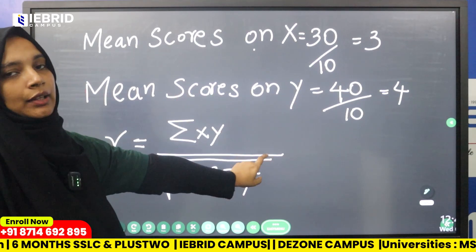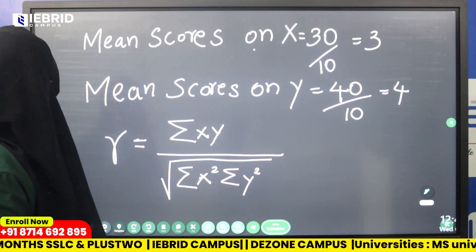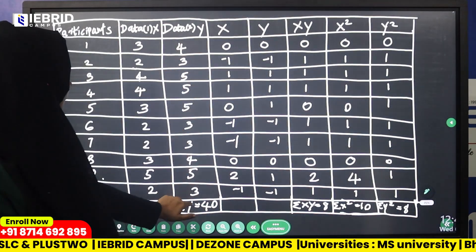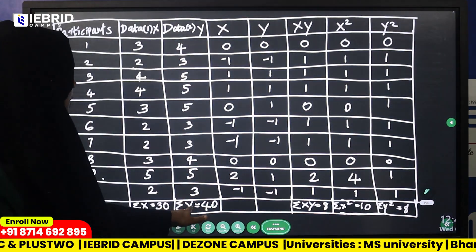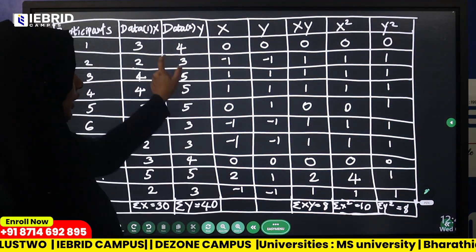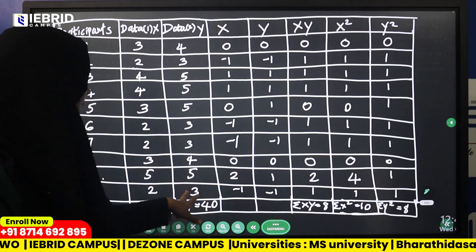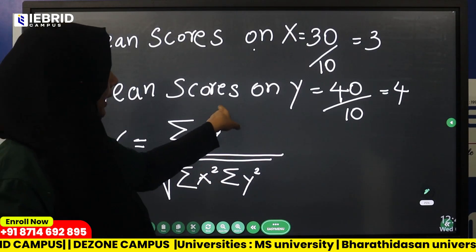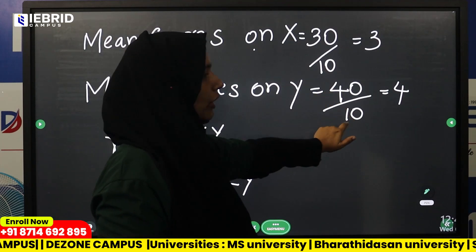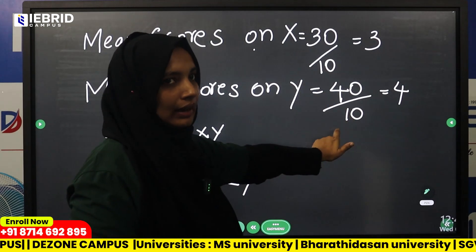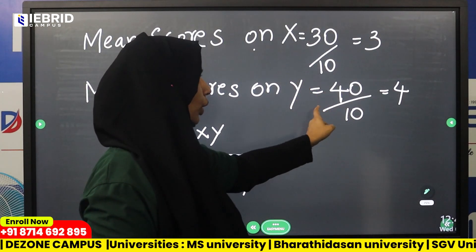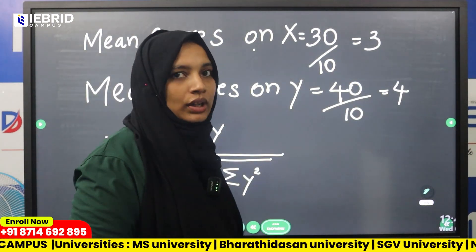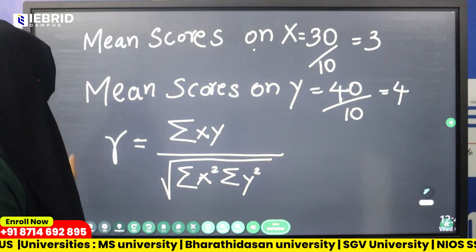Now for y: the mean of y is summation y divided by n. Summation y is 40 and n is 10. So the mean of y is 40 divided by 10, which equals 4.